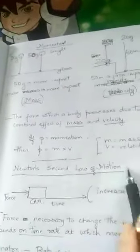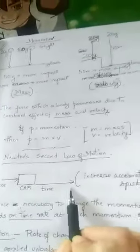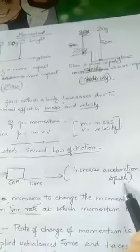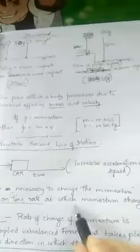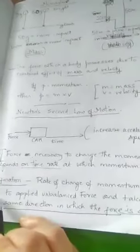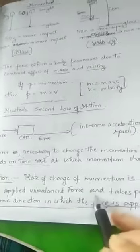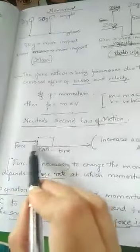Now I come to Newton's second law of motion. If I have a car whose battery is running out and I ask some people to push it by applying a force, after a particular time it will increase in acceleration and speed. The force necessary to change the momentum depends on the time rate at which the momentum changes. Newton's second law states that the rate of change of momentum is directly proportional to the applied unbalanced force, and takes place in the same direction in which the force is applied.